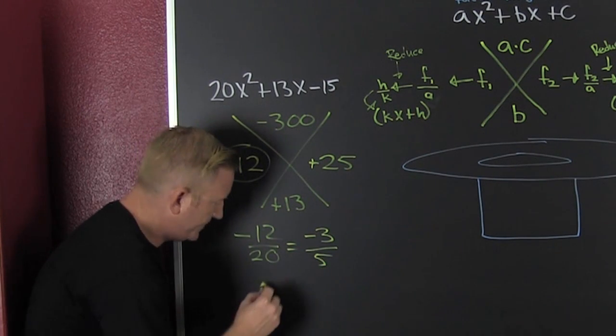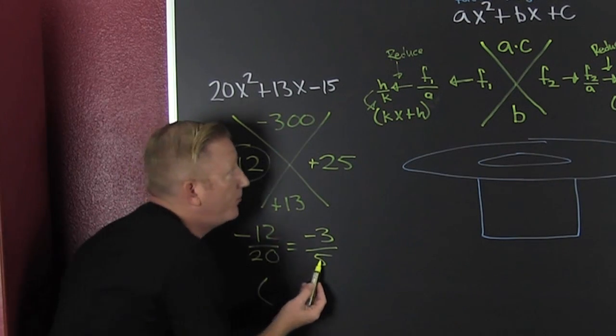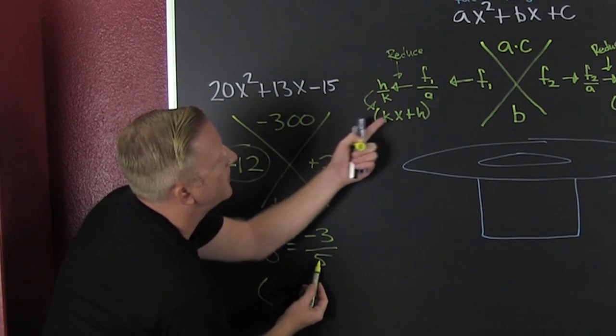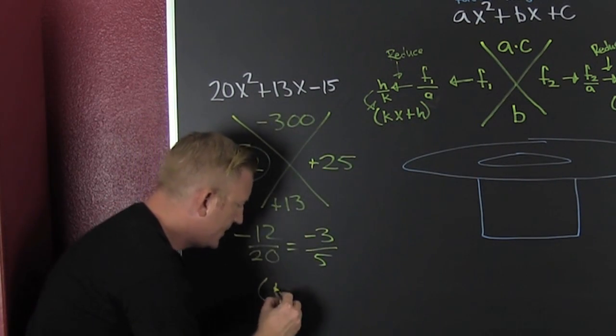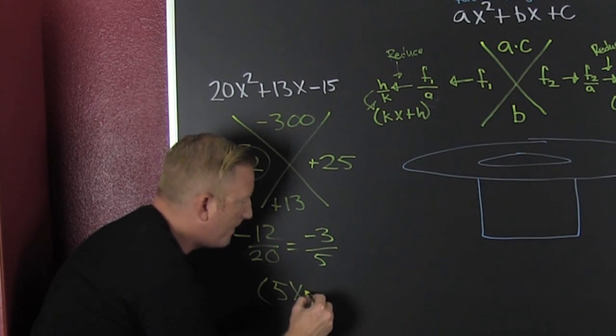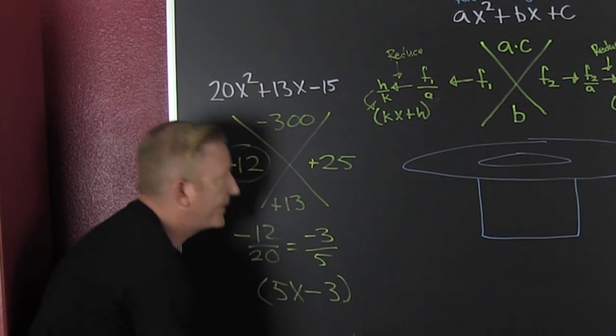And my factor is this one, bam, the bottom minus the top. So that's a 5x minus 3.